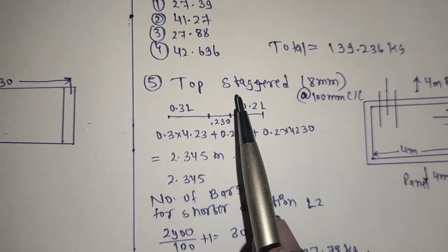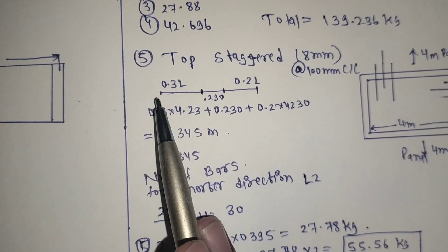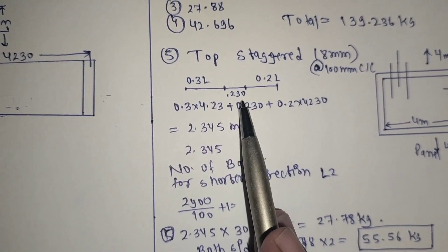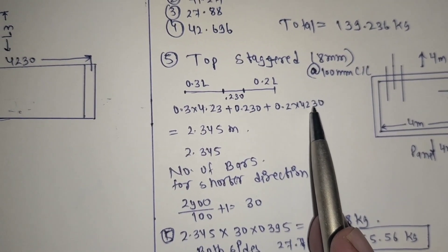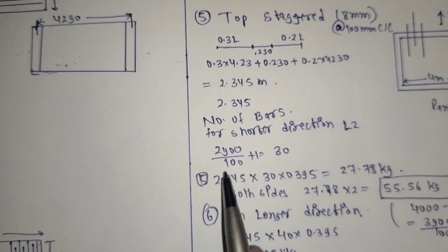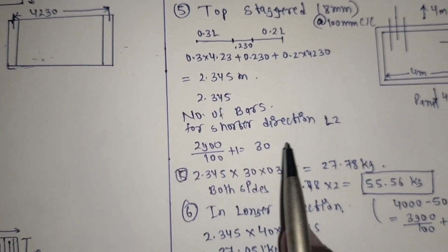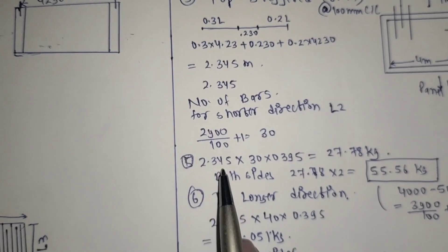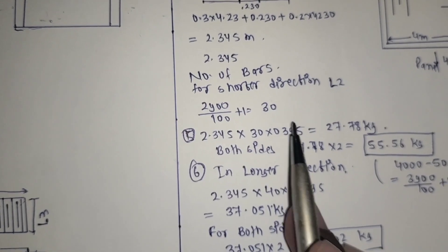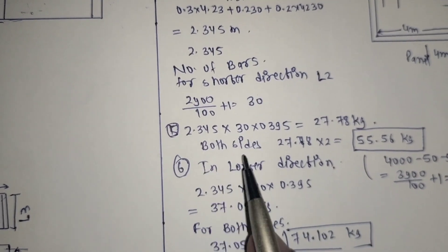For the staggered top bar: 0.2L into 0.3L. Here we take 3 into 4 — that is 3 plus 230 plus 230 mm beam width — 0.2L into 4.230 gives the cutting length. For the shorter direction, 2.9 divided by 100 plus 1 gives 30 numbers. So 2.34 into 40 into 0.395, because the top bar is 8 mm diameter with unit weight 0.395 kg, giving 27.78 kg.